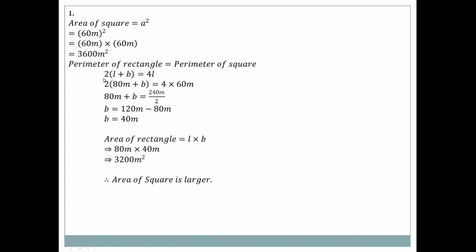For the perimeter, the perimeter of rectangle = 2 into (L + B), and perimeter of square = 4L. From the figure, perimeter of rectangle: 2 into (80 meter + B). For the square side, 4 into 60 = 240.